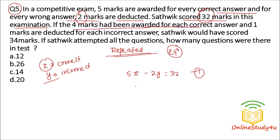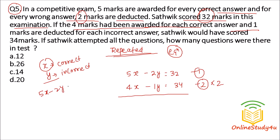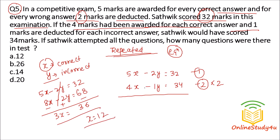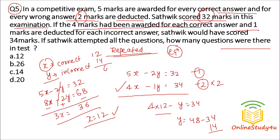If 4 marks were awarded for each correct answer and 1 mark deducted for each incorrect answer, Sattvic would get 34 marks. So 4X minus Y equals 34 — this is equation 2. Multiplying equation 2 by 2: 8X minus 2Y equals 68. Subtracting equation 1: 3X equals 36, so X equals 12. Substituting back: Y equals 14. So 12 questions are correct and 14 are incorrect, giving 26 total questions. Option B is correct.